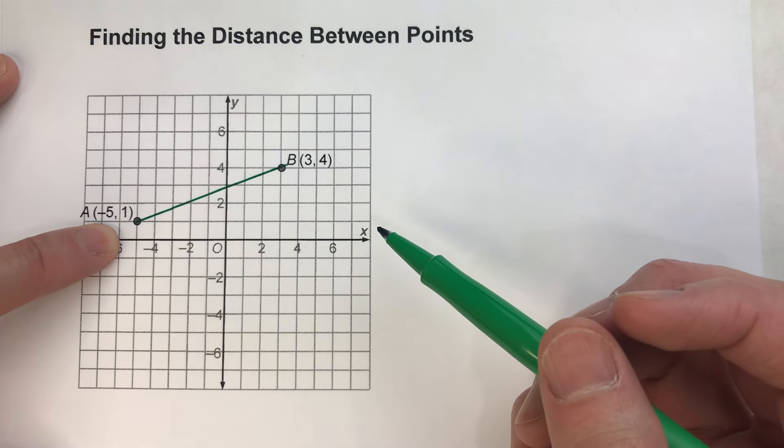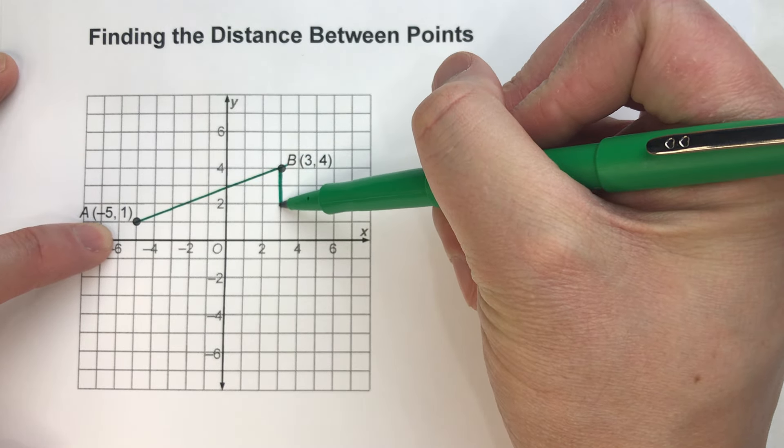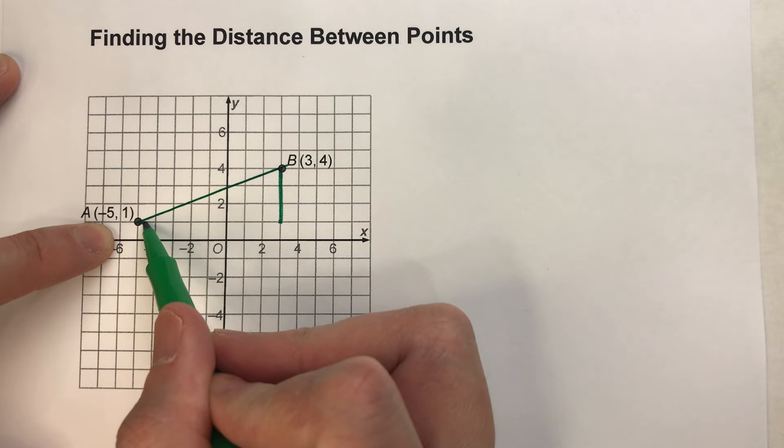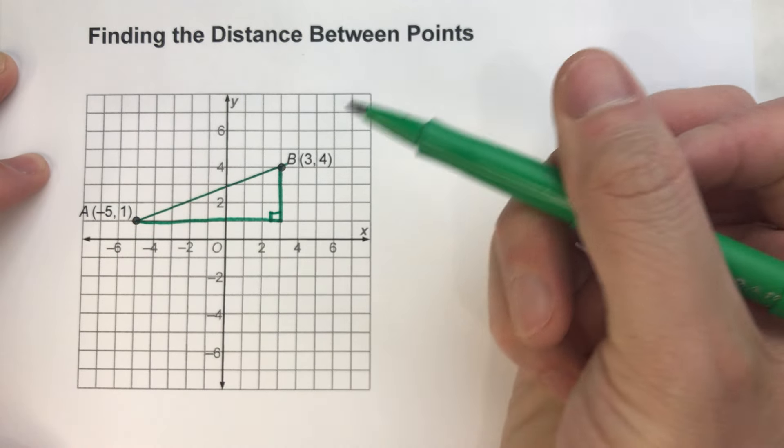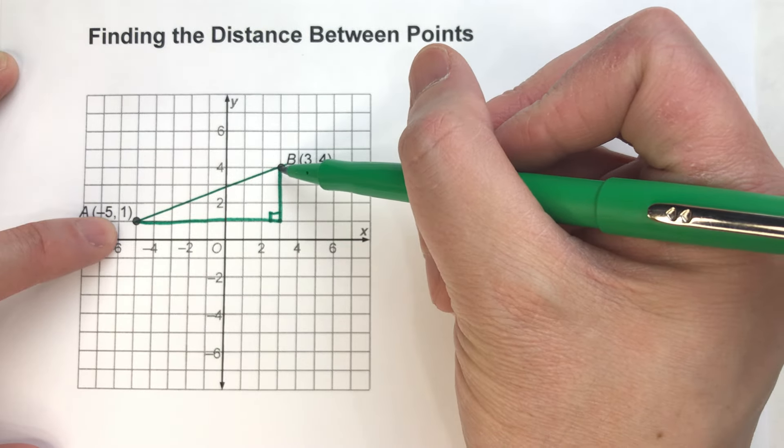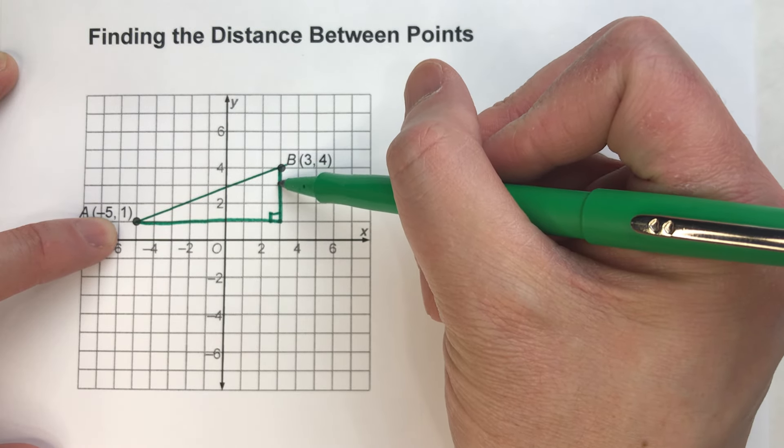Well, if you notice, I can just follow these grid lines from the points. And if you look closely, you'll notice, hey, I've got a right triangle. And right here, this distance is 1, 2, 3. So one leg of the right triangle is 3.